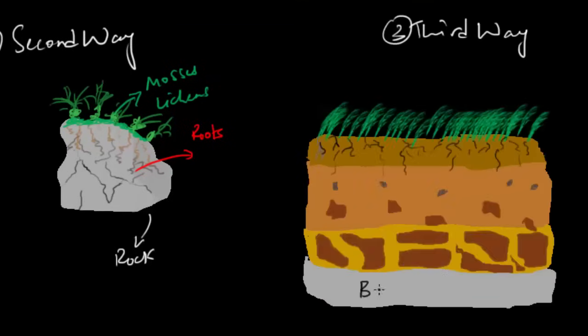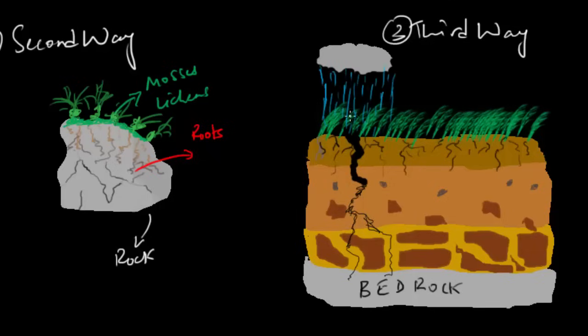If you dig into the soil deep, at some point you will reach the bedrock. Now what animals do is they create holes in the soil by digging. That allows water to reach down to the bedrock. And the same thing happens again. Water splits the rock. This is how rocks break down and soils are formed.